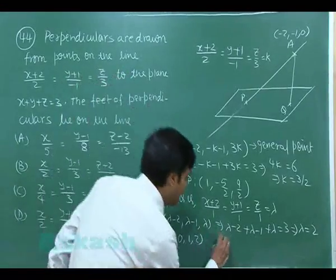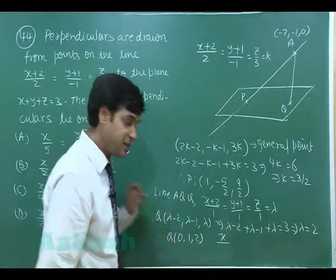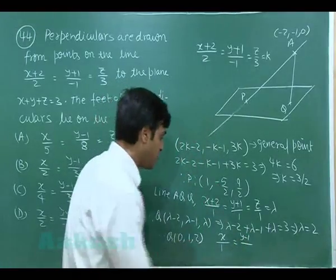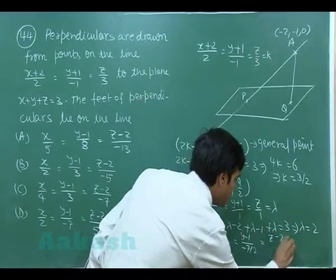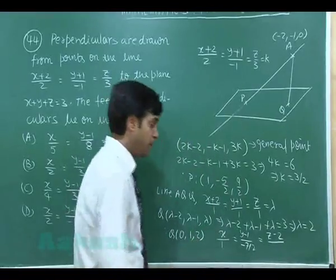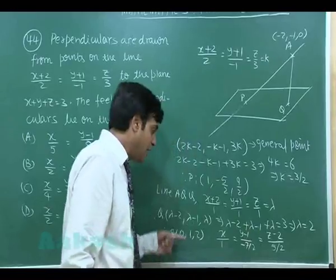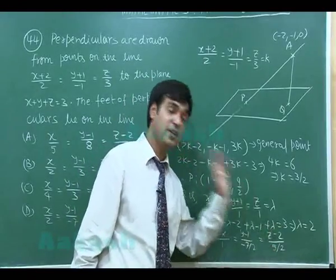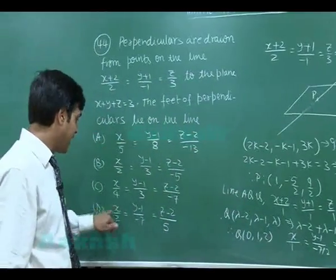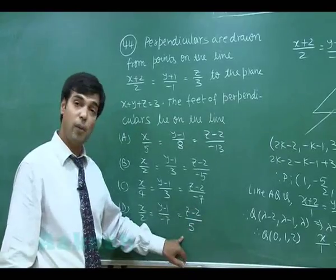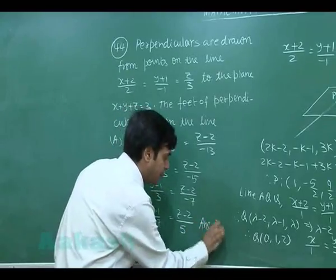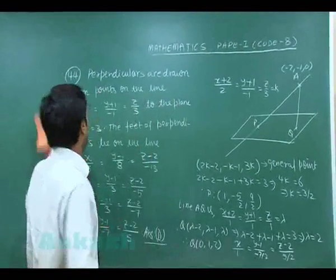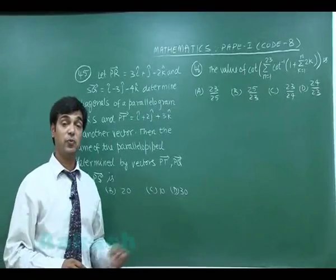Now with P = (1, −5/2, 9/2) and Q = (0, 1, 2), we write the equation of line PQ: x−0 / (1−0) = y−1 / (−5/2−1) = z−2 / (9/2−2). Multiplying all three denominators by 2 gives x/2 = y−1/−7 = z−2/5. Matching with the options, the correct answer is option D.